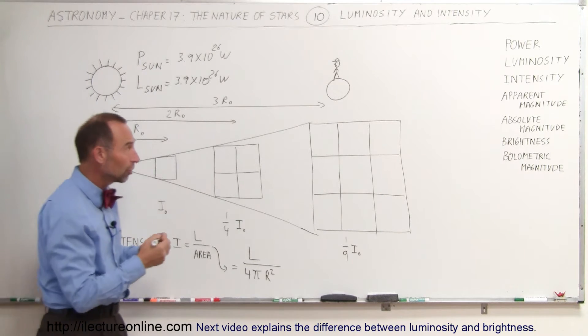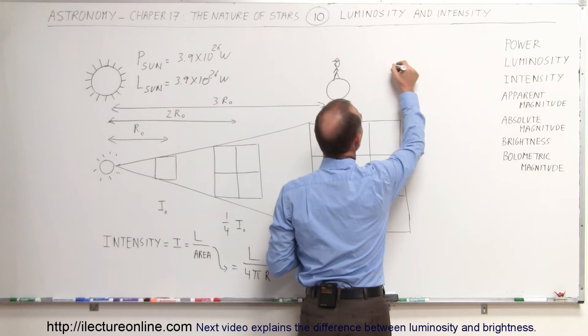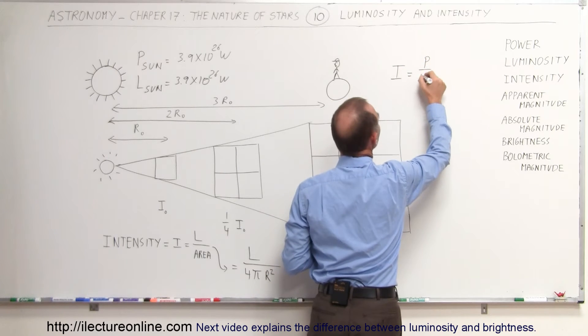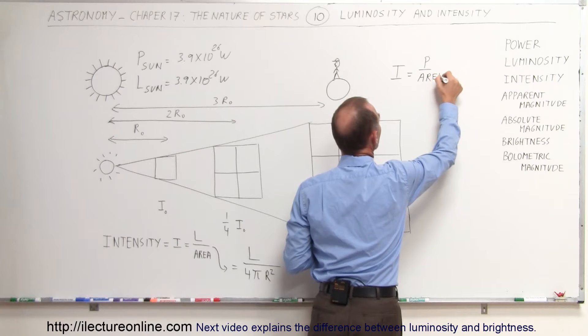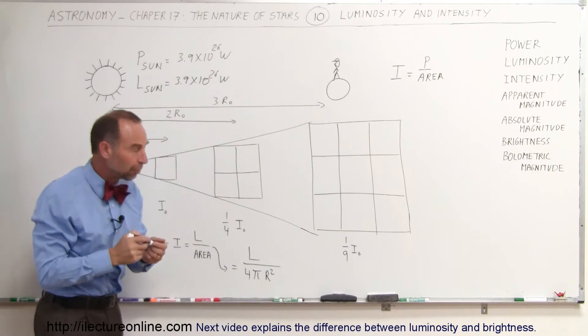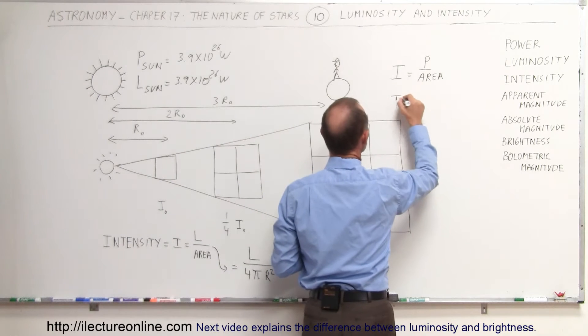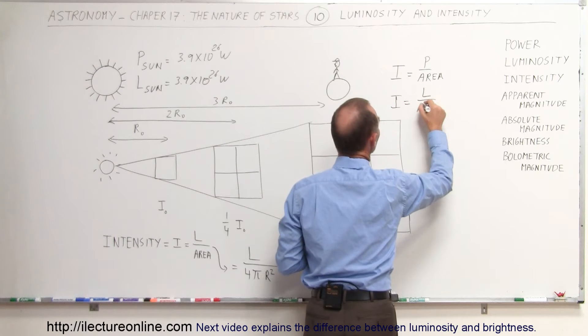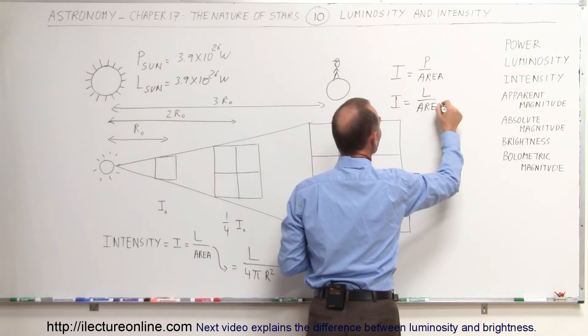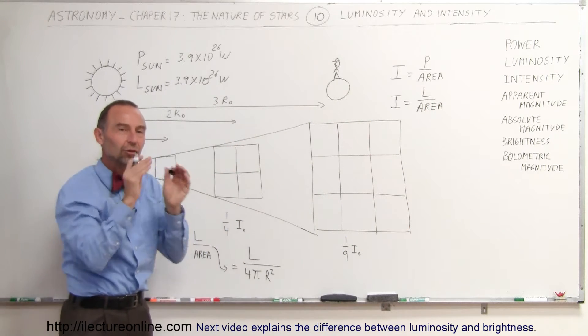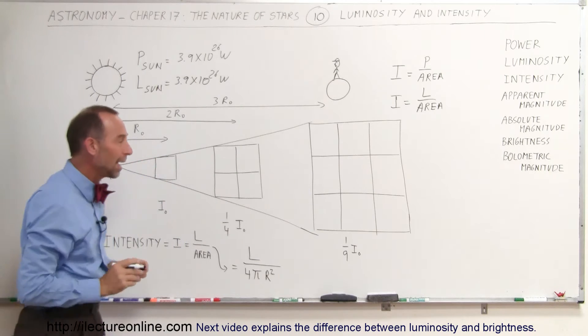Intensity is in terms of, and let me write the equation, intensity is equal to the power per unit area. So, it's over how much area does that power spread out. Or, in astronomy, I guess we can say that the intensity is equal to the luminosity divided by the area. So, as you go farther and farther out, the energy spreads over a larger and larger area. So, each area gets a smaller and smaller amount.